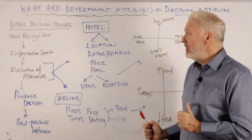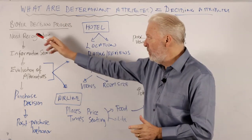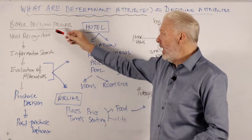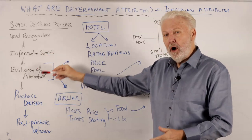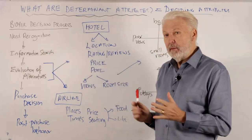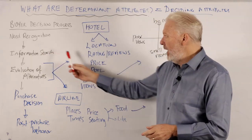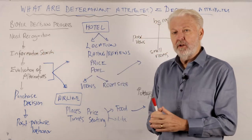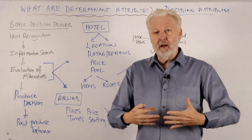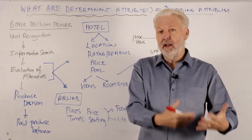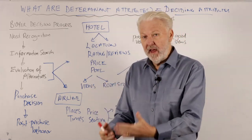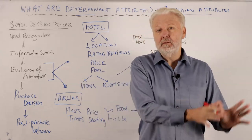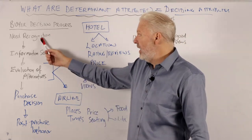To make sense of it, I'm quickly going to cover the buyer decision process that you've probably seen before — these are the steps that a buyer goes through in making a purchase decision. Initially there is some need, or sometimes called problem recognition. They have a problem in their life, or they've run out of something, or they feel that they need something, and then they decide they need to buy something. This is the starting point.